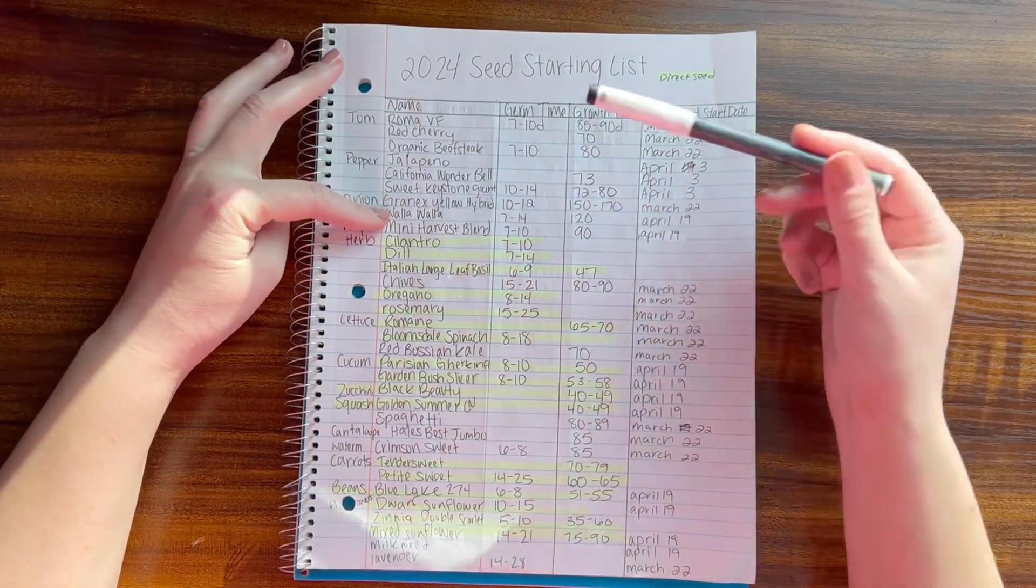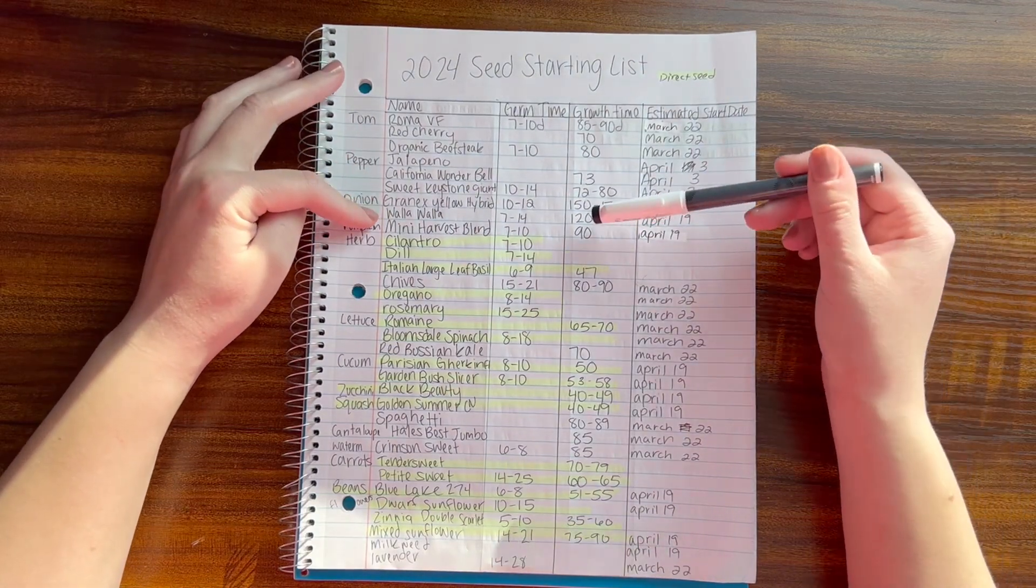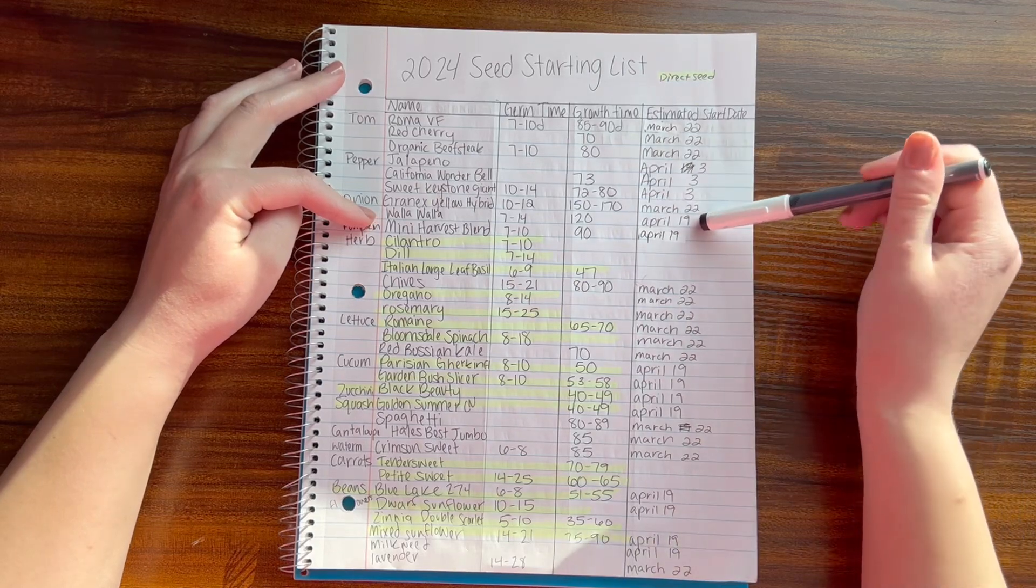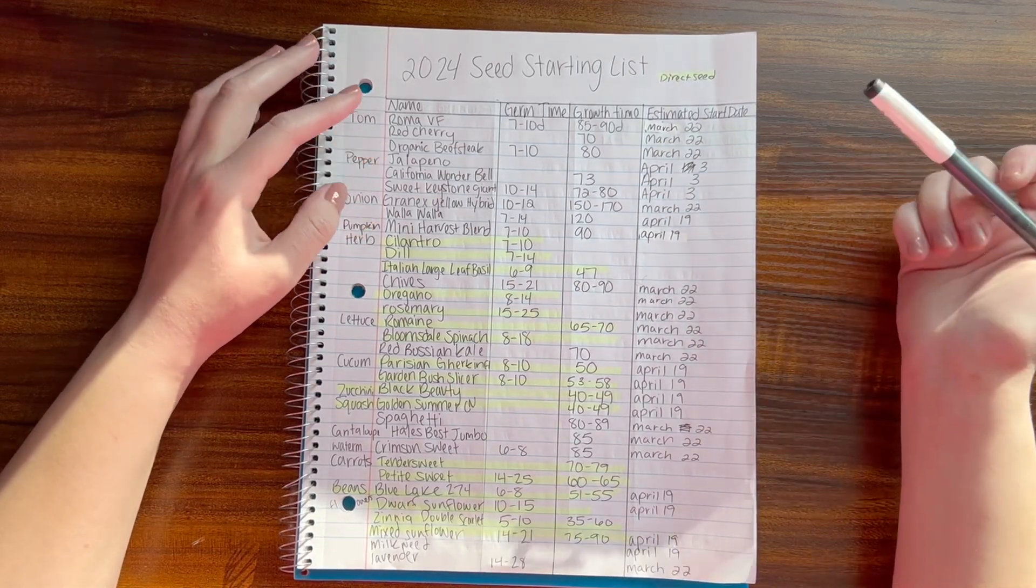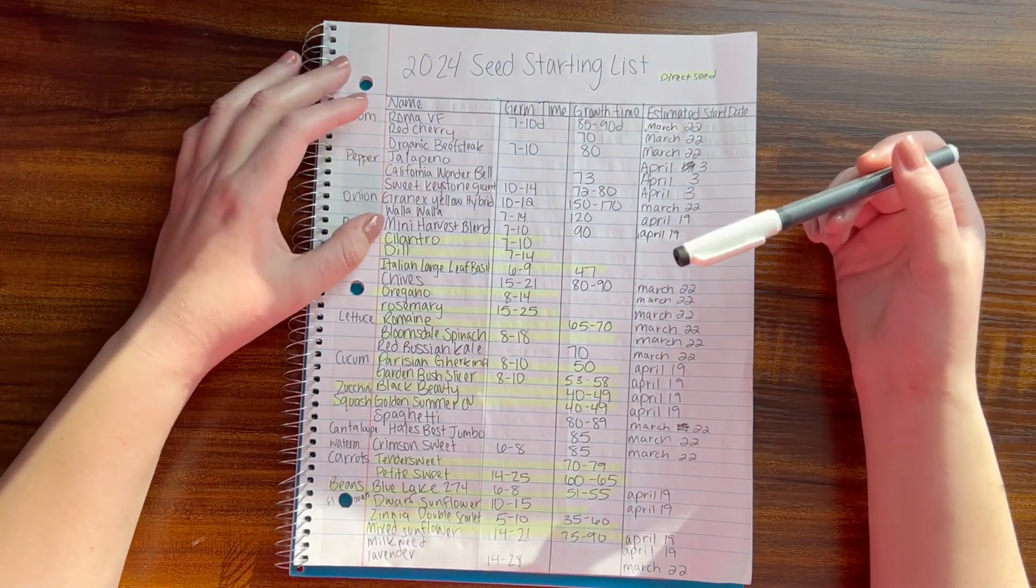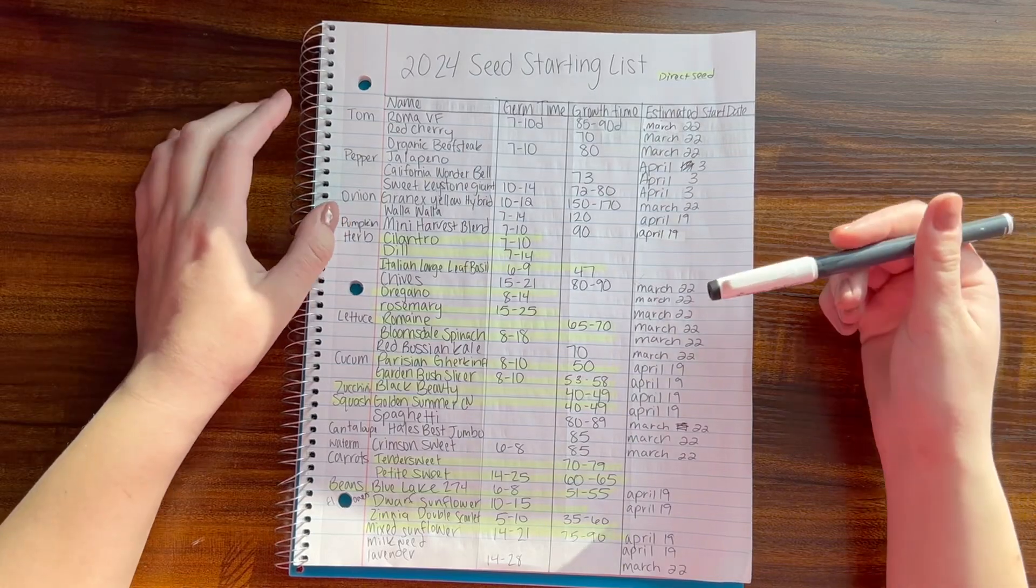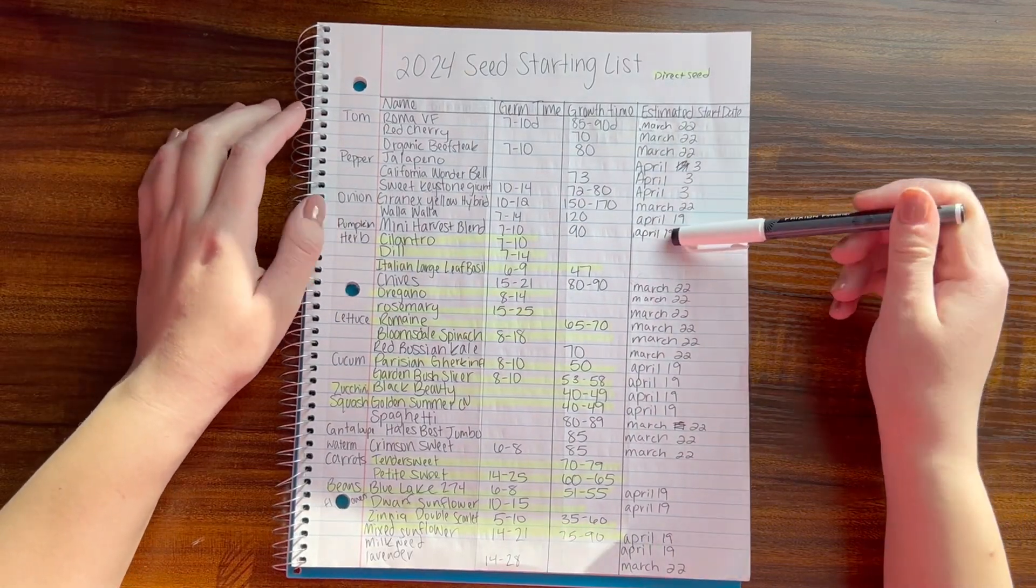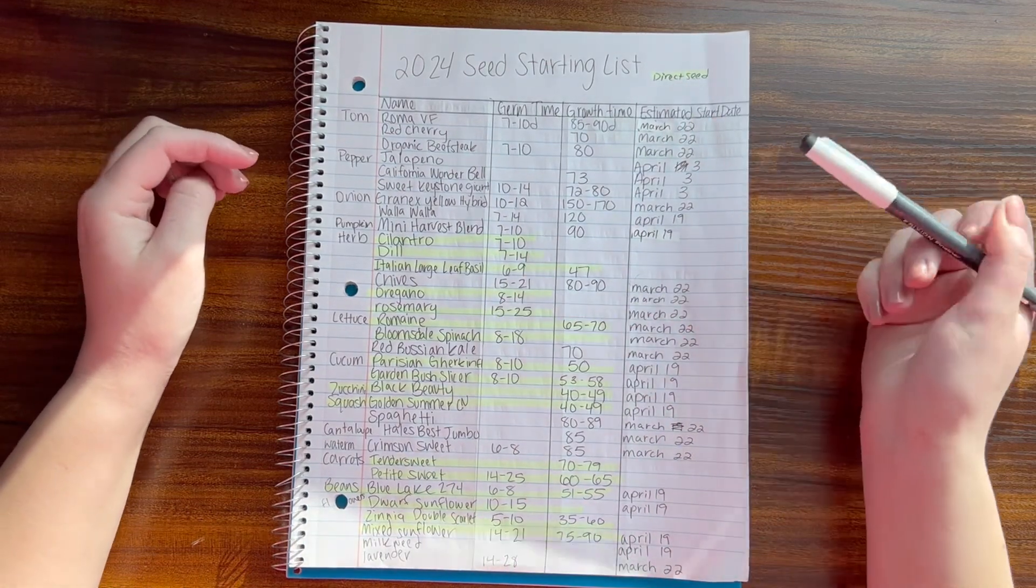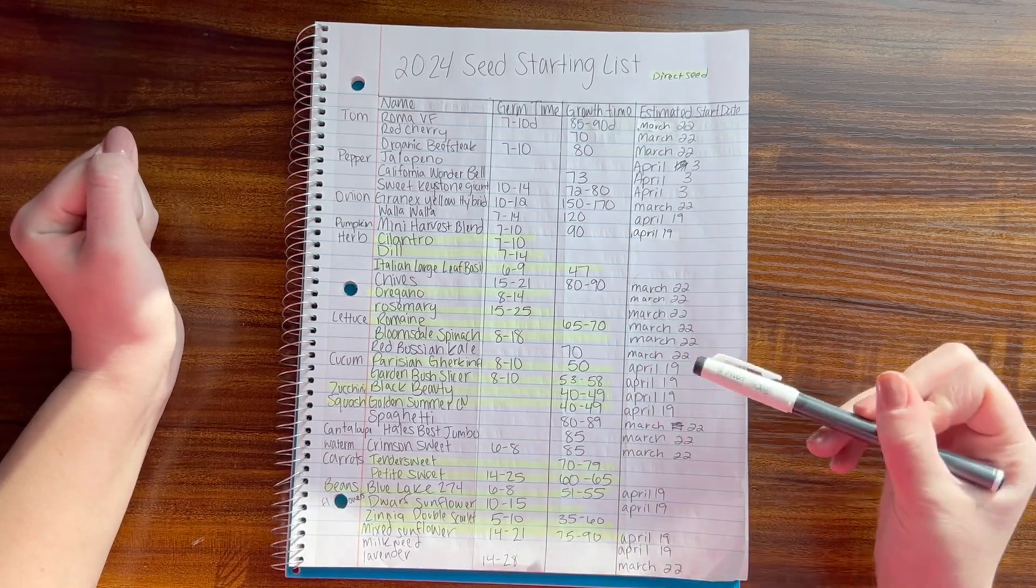I'll also start some Walla Walla onions. These are both really good storage yellow onions. This one grows a little bit faster at 120 days, so I'll start that on April 19th. For pumpkin, I'm going to do a Mini Harvest Blend - they're mini orange spotted pumpkins. I think they're going to be really cute, so I'm going to start those on the 19th as well. You can kind of ignore the direct seed notation because I highlighted some of these and then realized that I shouldn't. Basically if it's highlighted and has a date next to it, ignore the highlight - I'm going to start them inside.